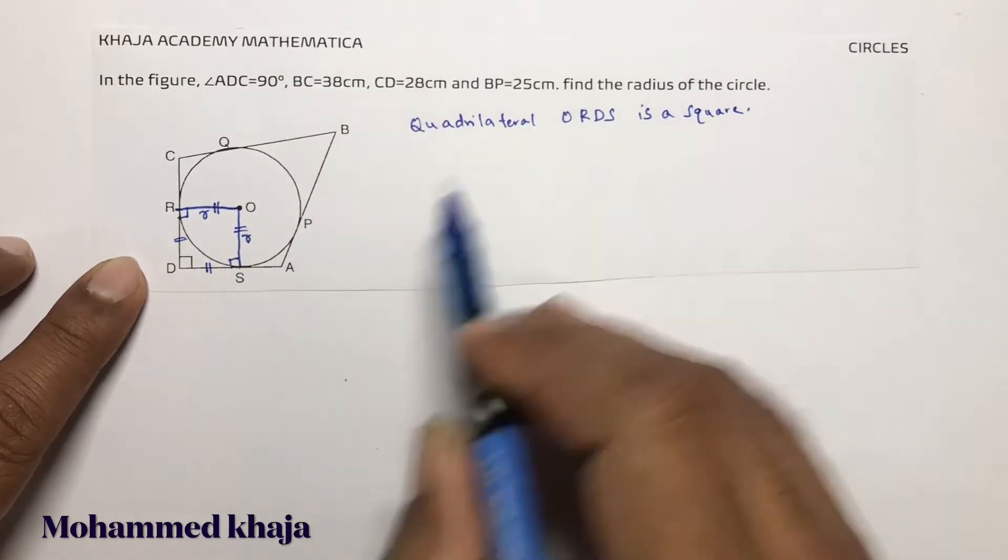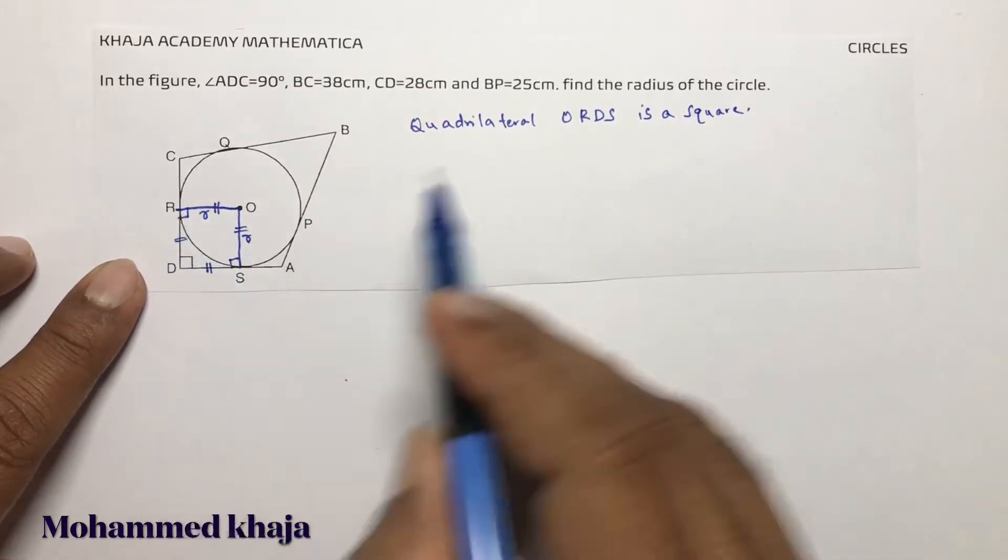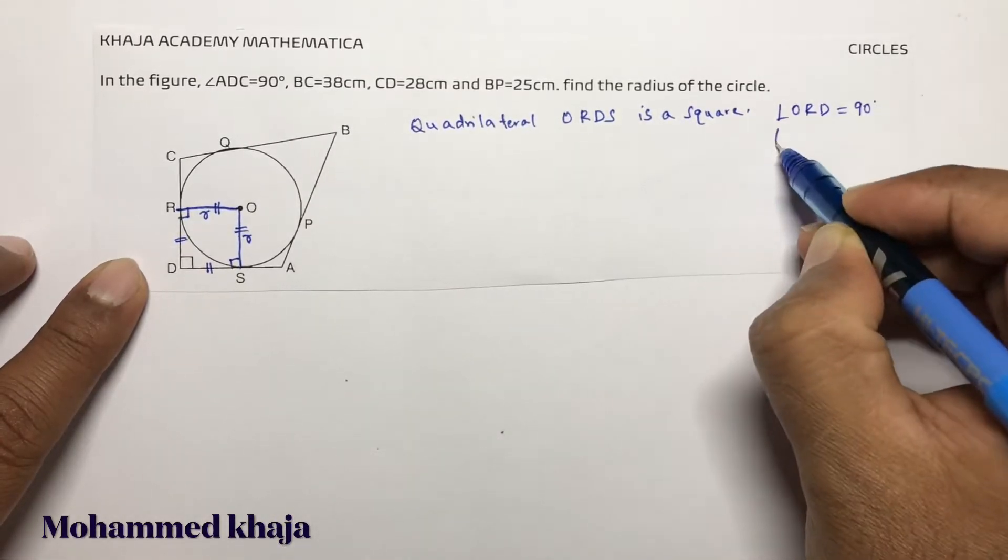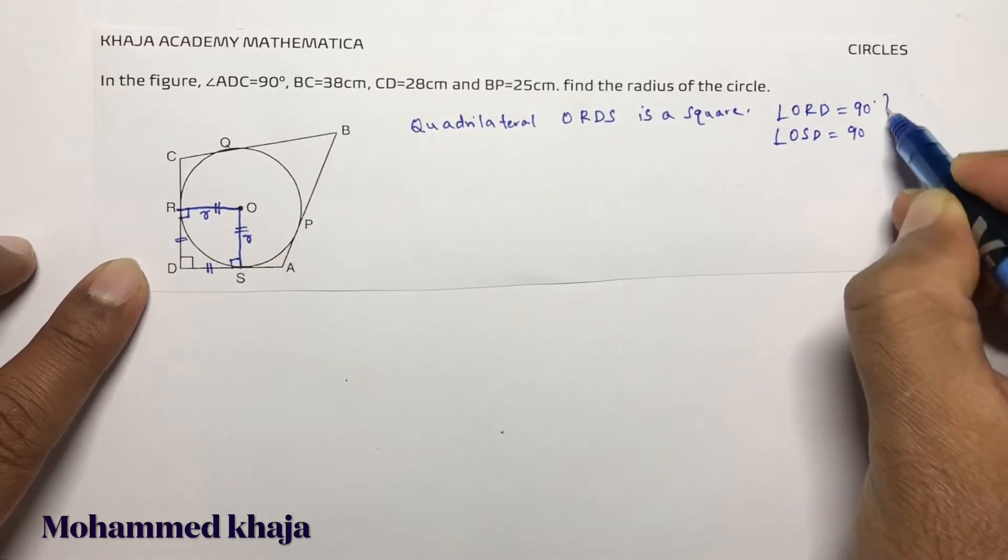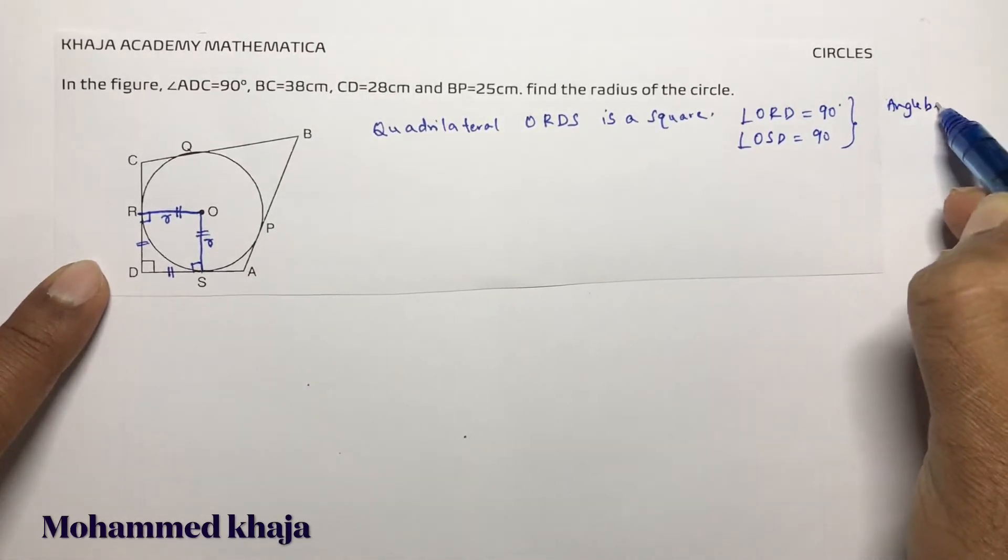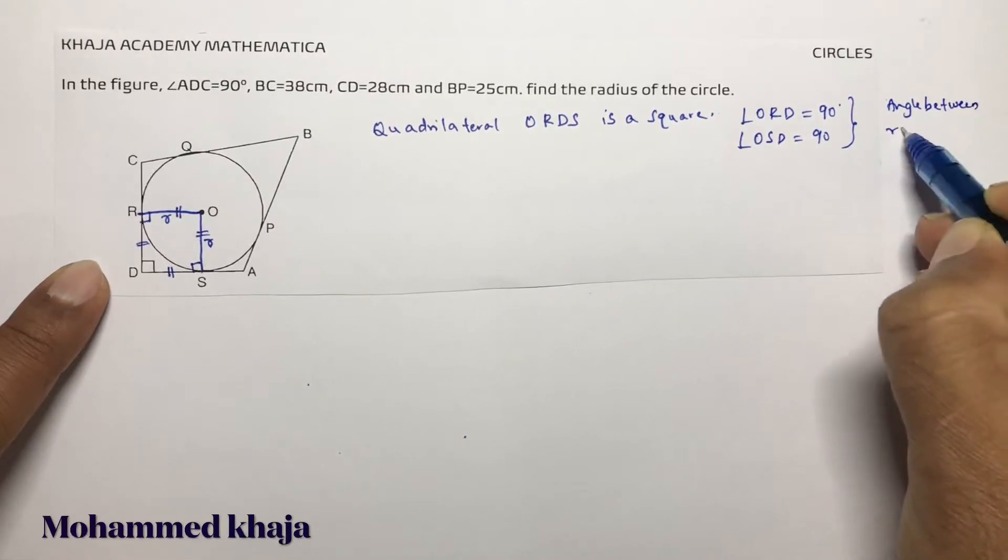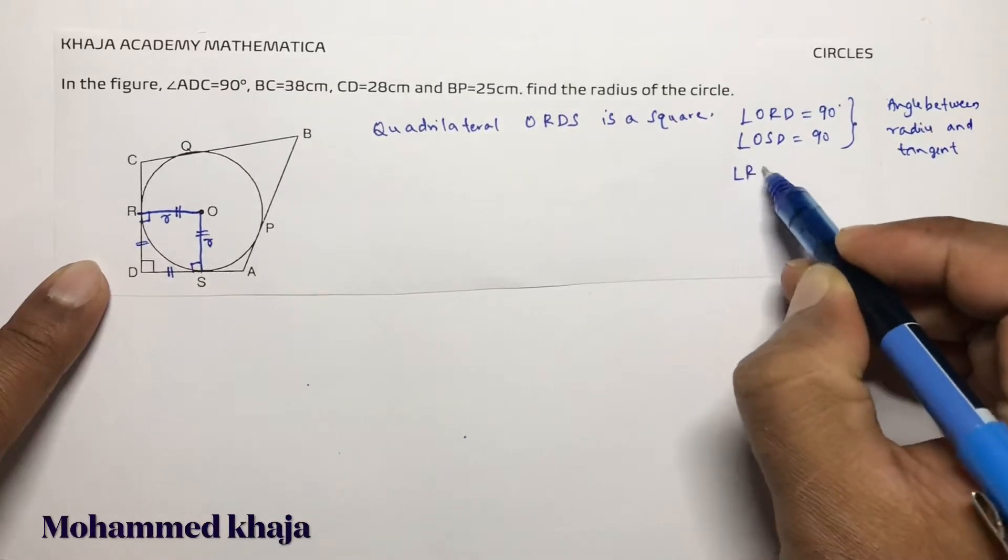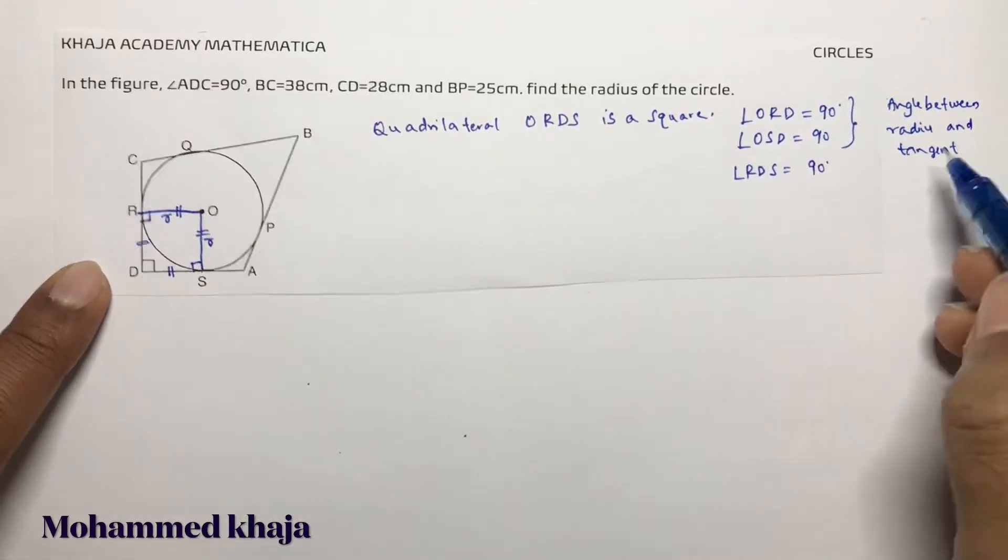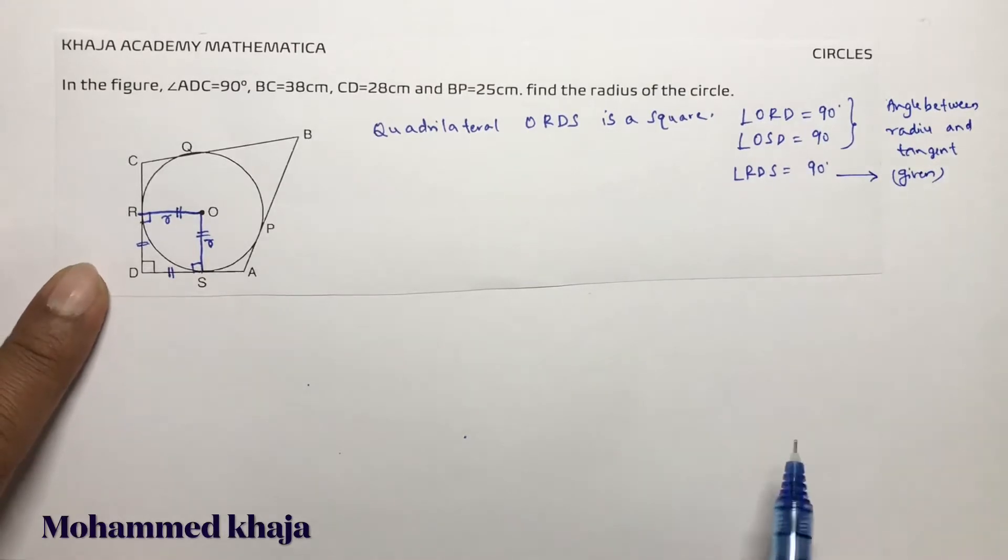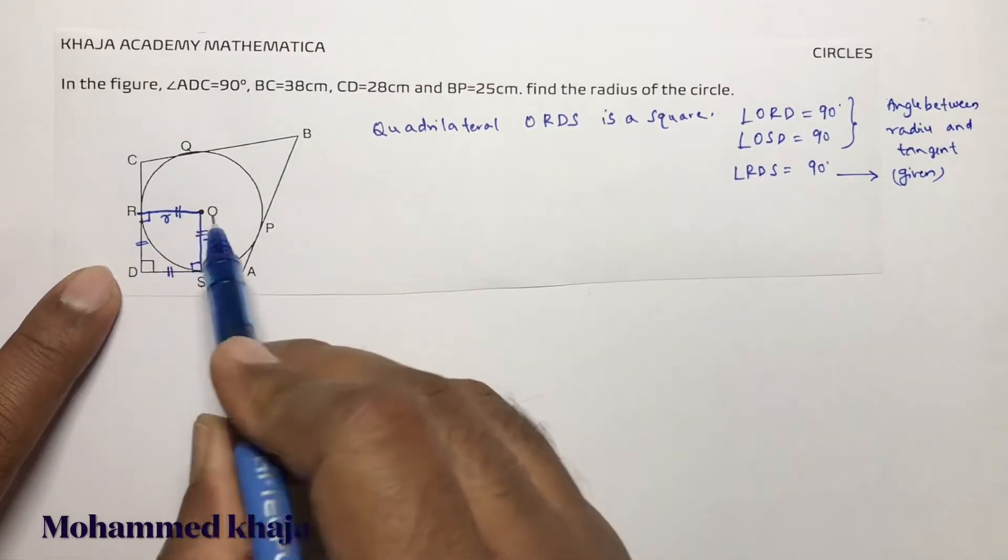You need to mention all these: angle ORD is 90°, angle OSD is 90°. The reason is angle between radius and tangent. And angle RDS is 90° because this is given. So if three angles are 90°, definitely the fourth angle will be 90°.